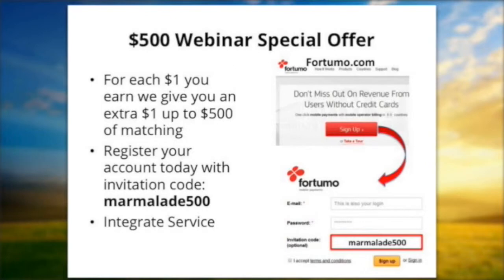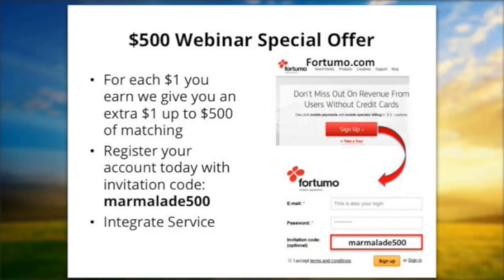This is a special offer we're doing for webinar participants. As a thank you, we're doing a $500 special offer where for each dollar you earn with Fortumo, we're going to match it. So if you install our software in your code and you make $200, we'll give you $200. If you make $500, we'll give you $500. If you make $20,000, we'll give you $20,000 plus the $500. To get that, please go to our website — fortumo.com — or through the links on the Marmalade developer website. Click on sign up and in the invitation code, just put Marmalade 500 and we will add that promotion to your account. You still have to integrate it and get the software done, but that way it's enabled for you. That promotion is good for this year.